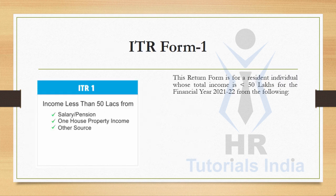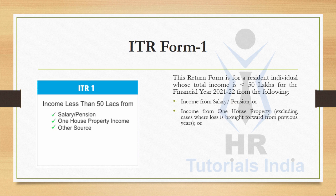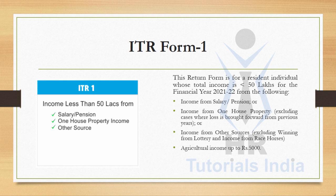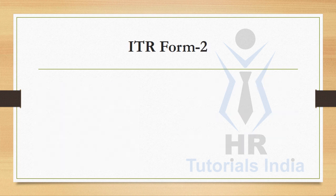ITR Form 1 is for a resident individual whose total income is less than 50 lakhs for the financial year 2021-22, from income from salary or pension, income from one house property excluding cases where loss is brought forward from previous years, income from other sources excluding winnings from lottery and income from racehorses, and agricultural income up to 5,000.